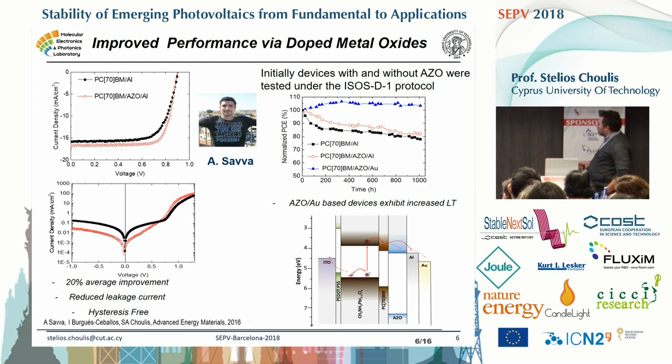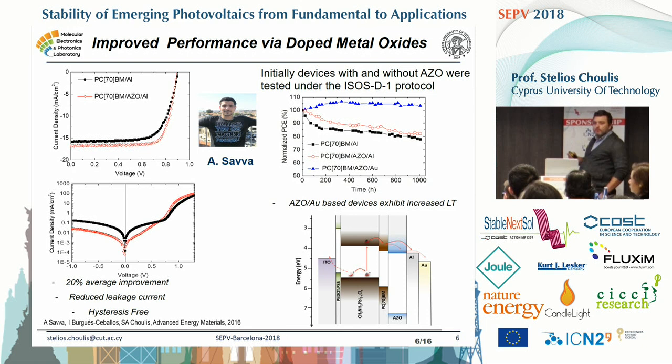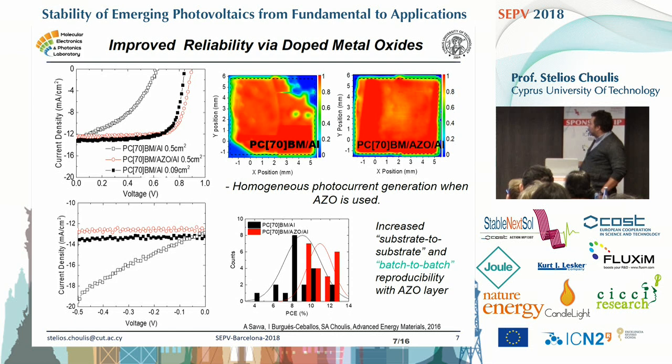We can make devices not only with aluminum but also with gold. When we make devices with aluminum zinc oxide and aluminum as a top electrode, we improve efficiency by around 20%, getting better leakage currents. The lifetime performance — this is a very basic protocol, IEC SD1 — shows a device with gold and AZO being very stable after one AZO's operation.